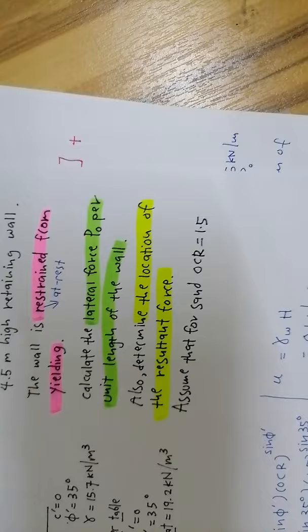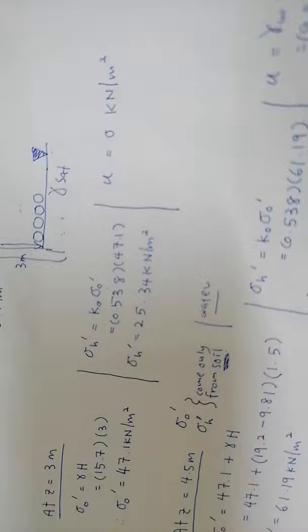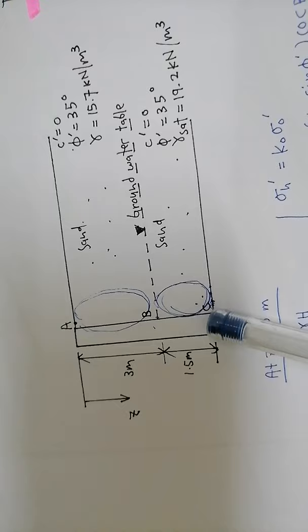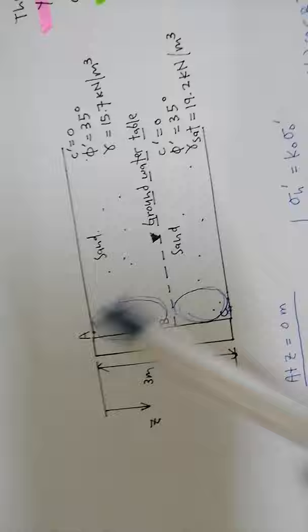I just want to emphasize that this is just one example. In real situations, there are many different cases. For example, this simple retaining wall with sand backfill had two layers — the first dry, the second saturated. In real life, you will face many different situations, and it can be very simple like this.